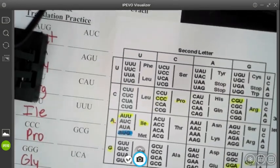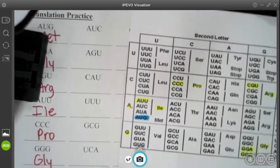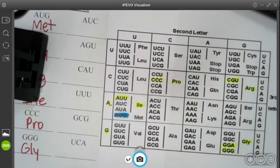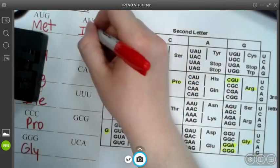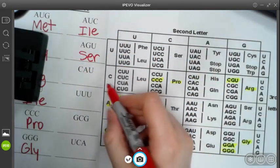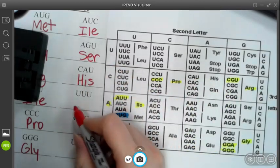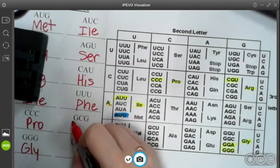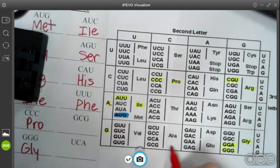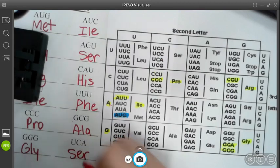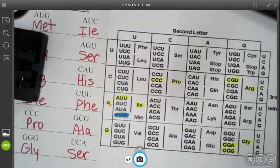I'll do one more column. We'll do this one again. If you want to pause it, try it yourself. And then see how you did. Please do that. So AUC. AUC is isoleucine. AGU, serine. CAU is here, histidine. GCG. So GCG is alanine. And then UCA is serine. So that's how you use the genetic code to figure out what amino acids go with each codon.